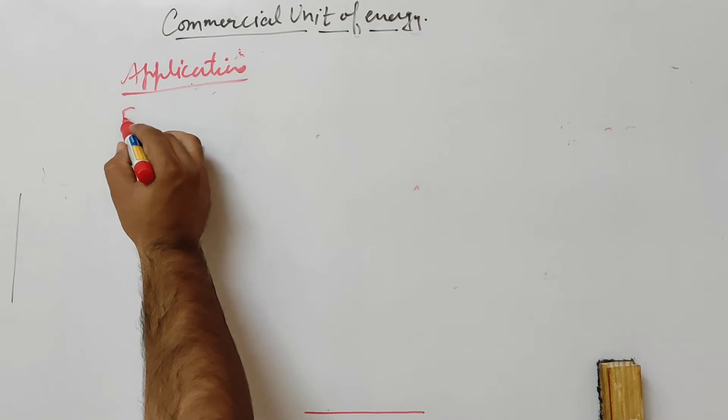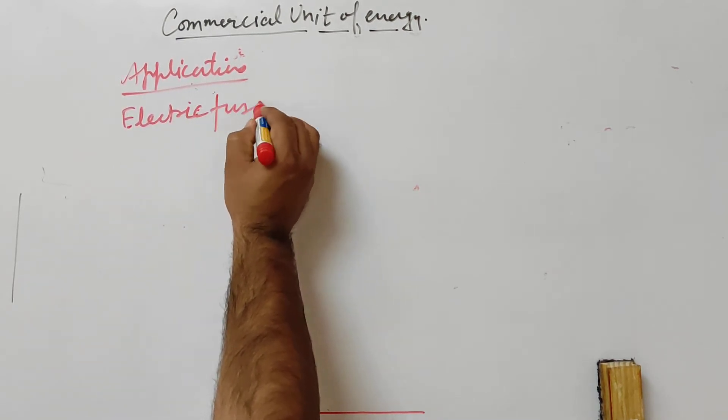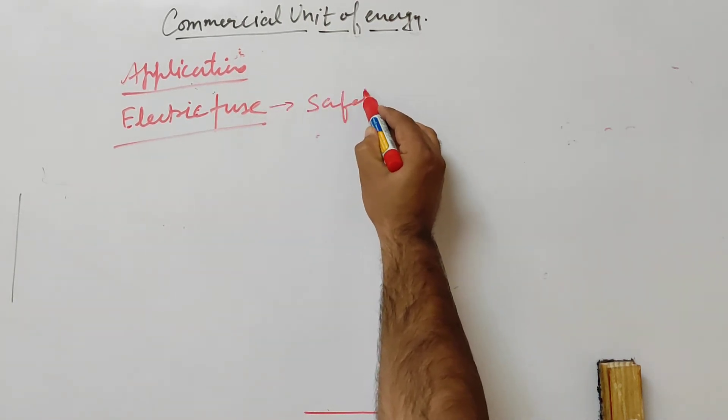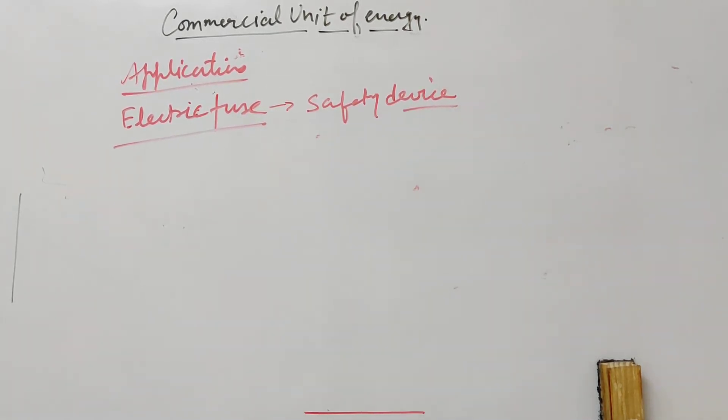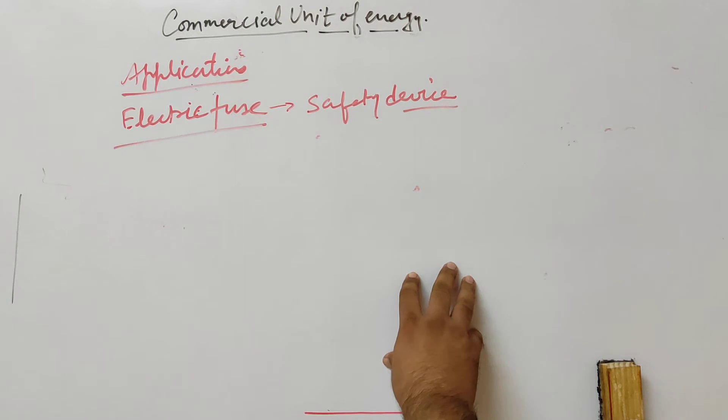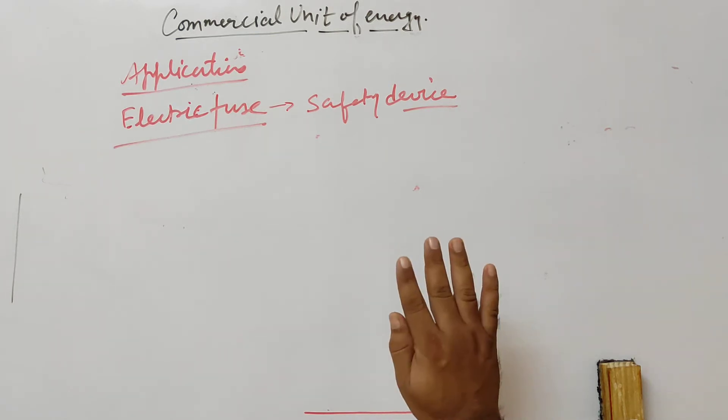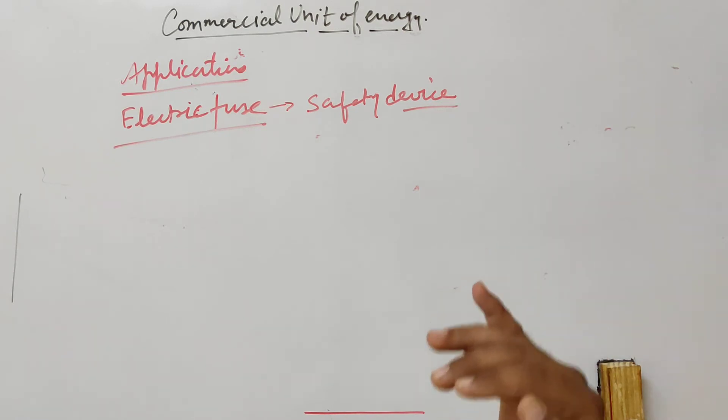Next we have electric fuse. Basically it is a safety device used in the electric circuit. If a current larger than the specified value flows through the circuit, the temperature of the fuse wire increases, it melts and breaks the circuit.